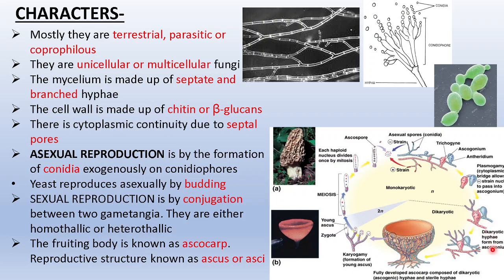In the dikaryotic structure, the nuclei gradually fuse together to form the ascogonium. Then karyogamy takes place — union of the nuclei — along with formation of the young ascus. The young ascus, which is the zygote, then undergoes meiosis — reduction division — to reduce the chromosome number, since fungi are usually haploid organisms.